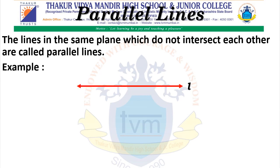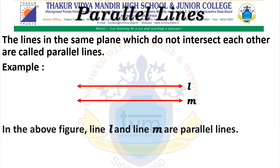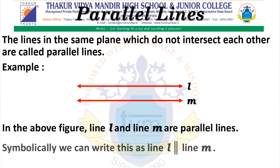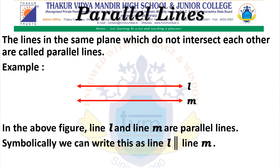Here we have line L and here we have another line M. You can see that line L and line M do not meet each other, do not intersect each other. Even the distance between those two lines is the same. Such lines are called parallel lines. So in this figure, line L and line M are parallel lines. Symbolically, we can write this as line L parallel line M. You can see there are two vertical lines — that is the symbol for parallel lines.